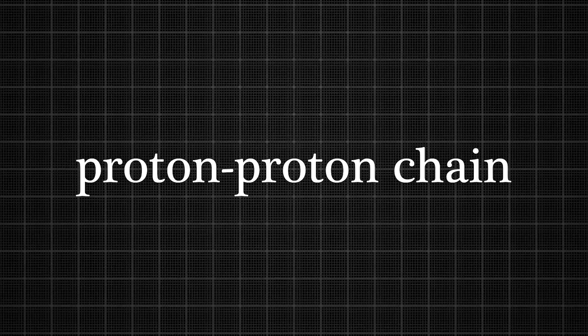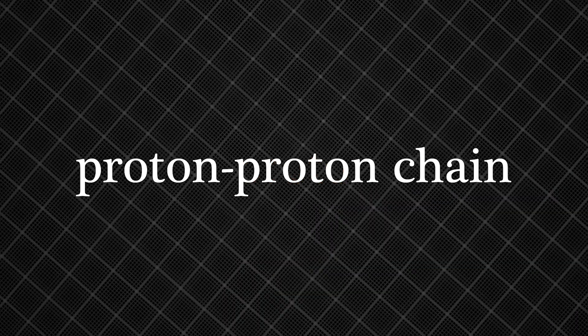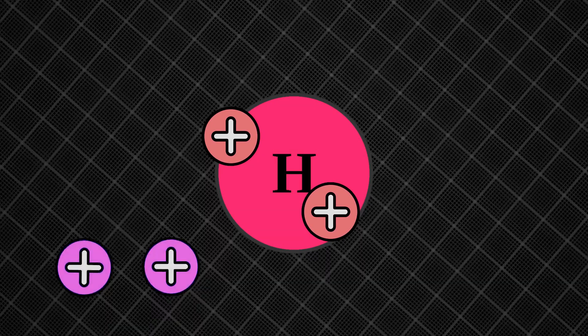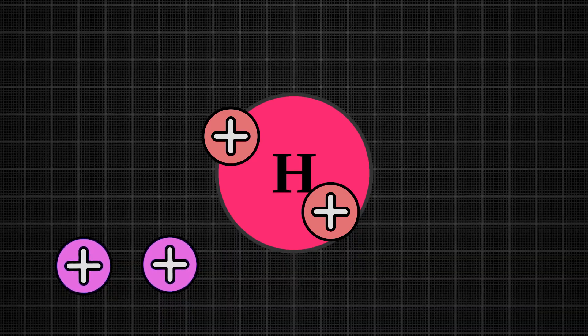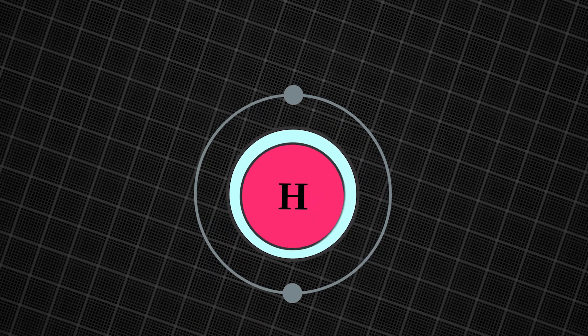The proton-proton chain, occurring in smaller stars like the sun, has protons fused directly into helium, which release two free protons to continue the reactions. The carbon-nitrogen-oxygen, or CNO cycle, in larger stars produces energy more quickly, and its hydrogen fused into helium with carbon, oxygen, and nitrogen as catalysts.